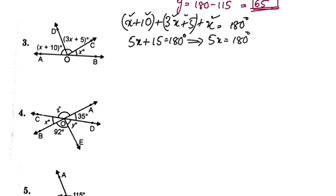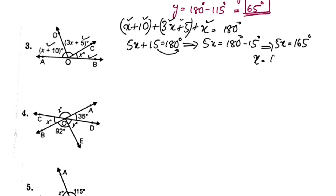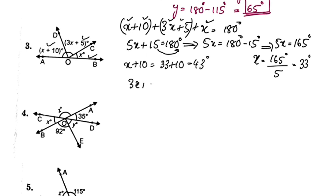5x is equal to 180 minus 15, which is 165 degrees. 165 divided by 5 is equal to 33 degrees. So x plus 10 is equal to 33 plus 10, which is 43 degrees. And 3x plus 5 is equal to 3 into 33 plus 5, which is 99 plus 5 — that is 104 degrees. X is equal to 33.